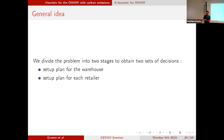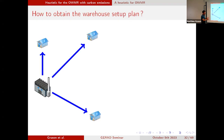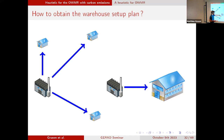For the first stage, the idea is to go from the one warehouse multi-retailer problem to a two-level lot sizing problem. We aggregate all the retailers into one very big retailer, whose demand is the sum of all demands from the different retailers, same for the setup cost. We solve this two-level lot sizing problem to have access to the production decision at the warehouse level.